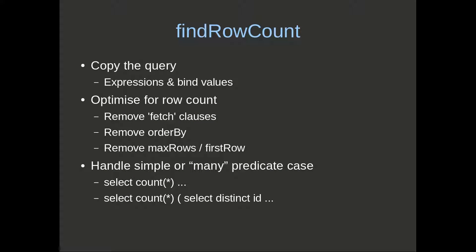So going back to the slide — find row count takes a copy of the query so we can use it multiple times for both find list and find row count. EBean takes a copy with the expressions and bind values, removes bits it doesn't need like fetch clauses, and then produces either a select count star or a select count star wrapped on a select distinct ID for the many-predicate case.